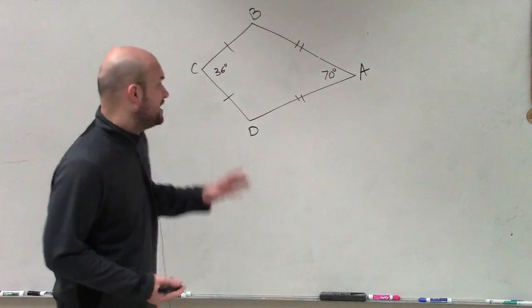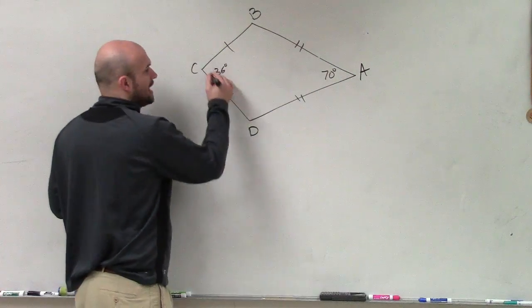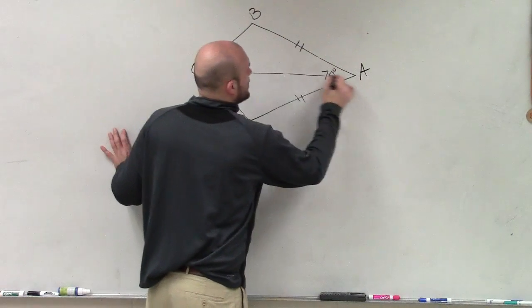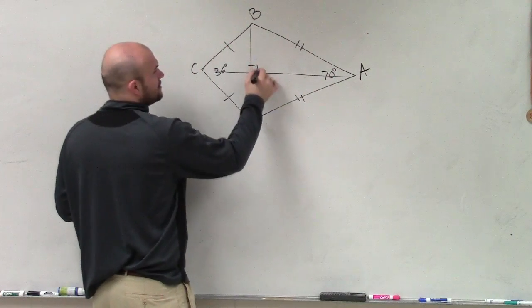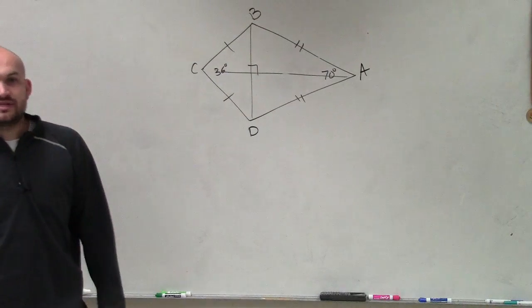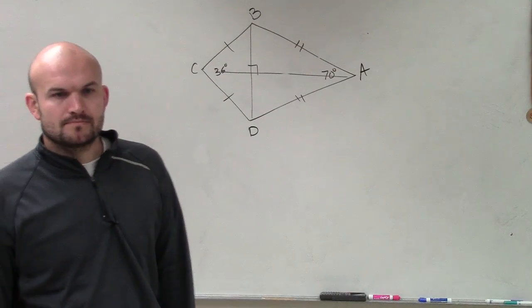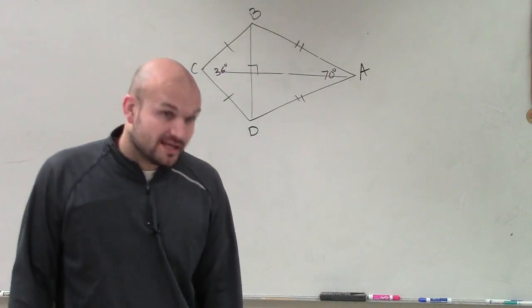Well, we know that when we have a kite, we have two congruent opposite sides. We also knew that the diagonals were perpendicular to each other.